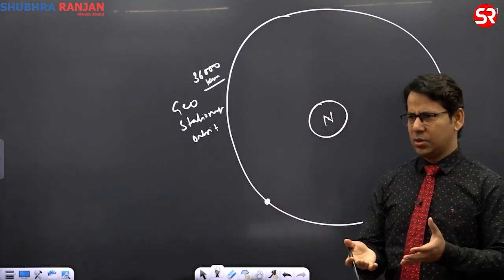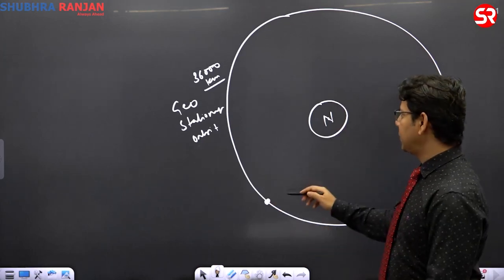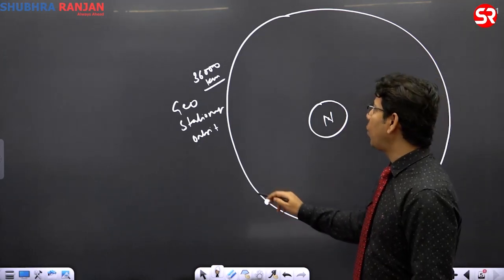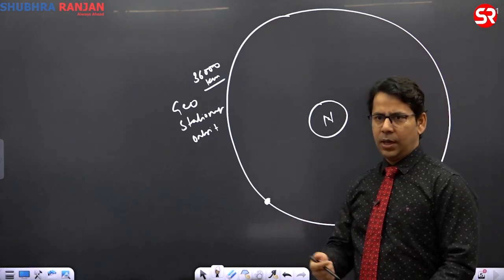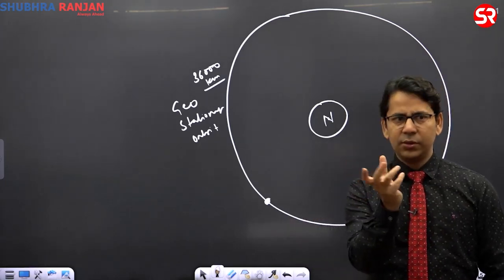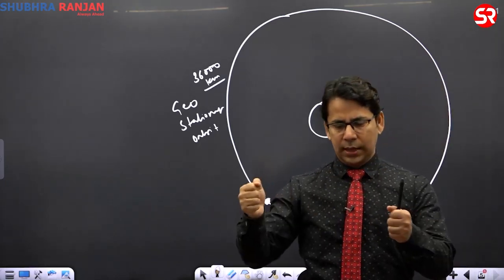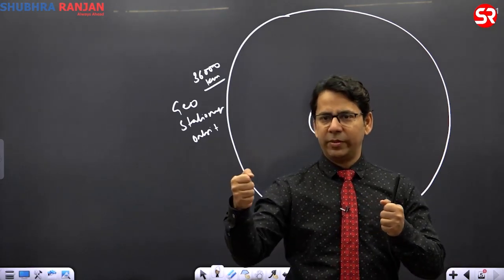You know that concept of GSO. Because at 36,000 km, the satellite will take one turn around Earth in 24 hours, and Earth will also rotate on its axis in 24 hours, so Earth and satellite will have no relative motion between them.